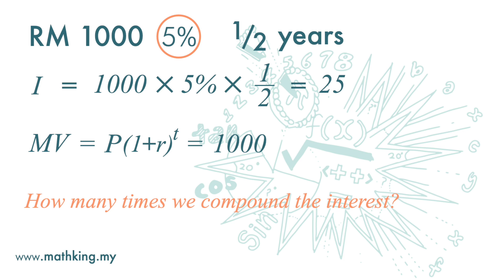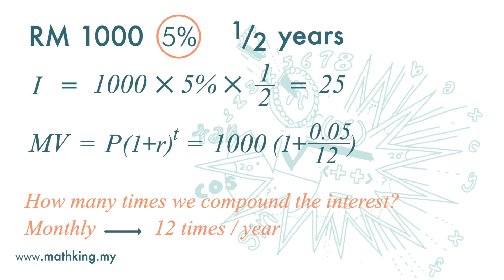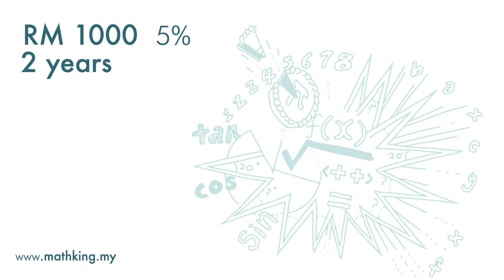If we compound the interest monthly, then the monthly interest is five percent divided by twelve. Since we compound it monthly, we compound it twelve times a year, and half a year is six months — so the time period t here is six. We get 1025 ringgit 26 cents.